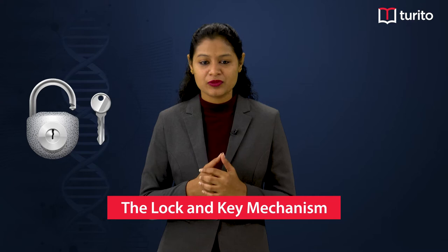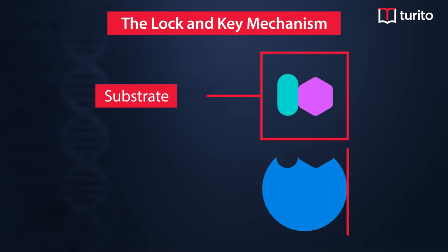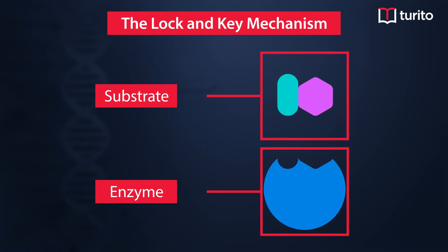Every lock has a specific key, and similarly every substrate has a specific enzyme. There is a similarity in the geometrical shape and also the functional groups present at the active site are very common, like the amino group or the carboxylic group. Just as a lock can be opened by a specific key, every substrate has a specific enzyme — this explains the specificity of the enzyme.